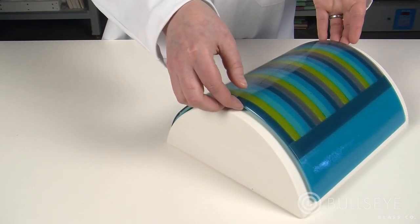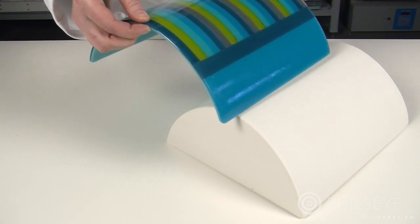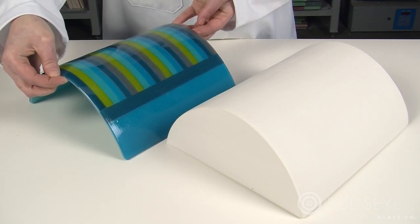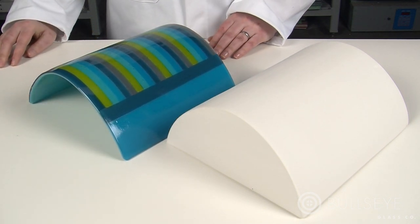And ceramic molds with a gentle, simple curve allow glass which has been slumped over the form to contract with little resistance.